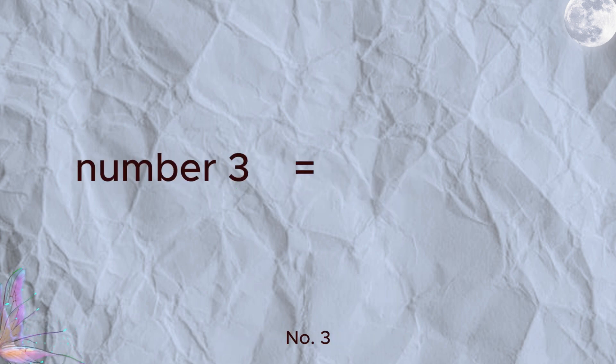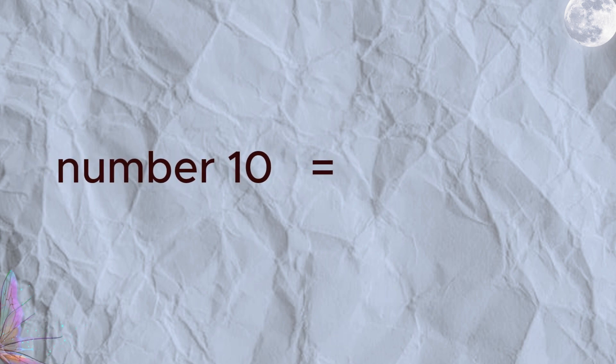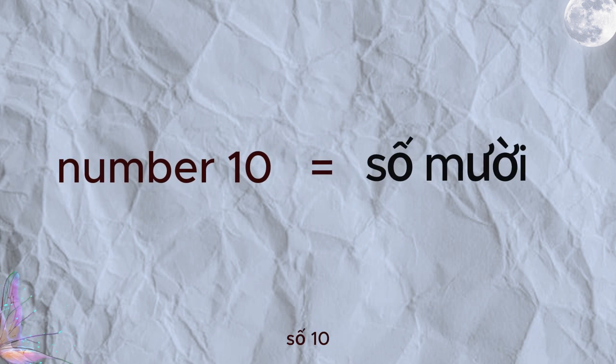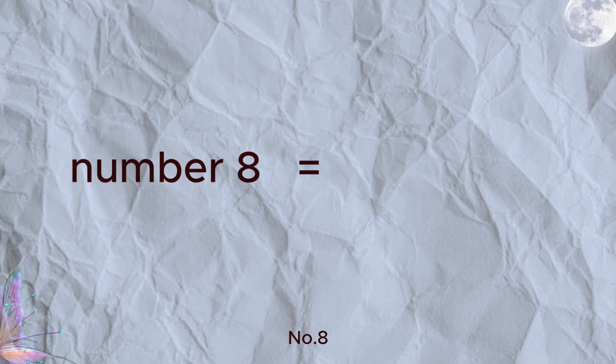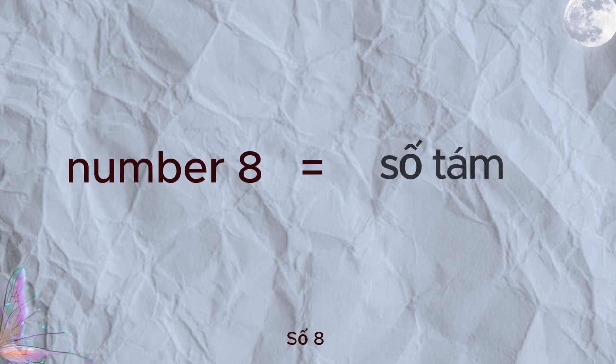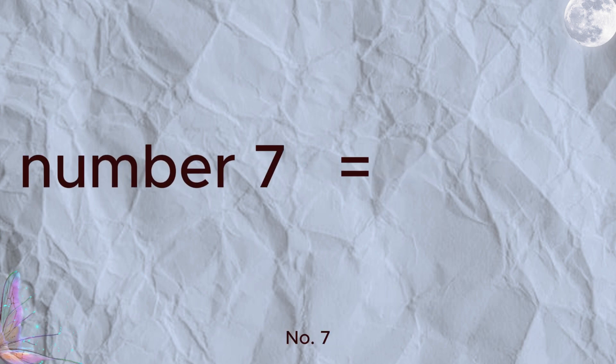How do you say number 3? Số ba. Number 10. Số mười. Number 2. Số hai. Number 6. Số sáu. Number 8. Số tám. Number 4. Số bốn. Number 7.